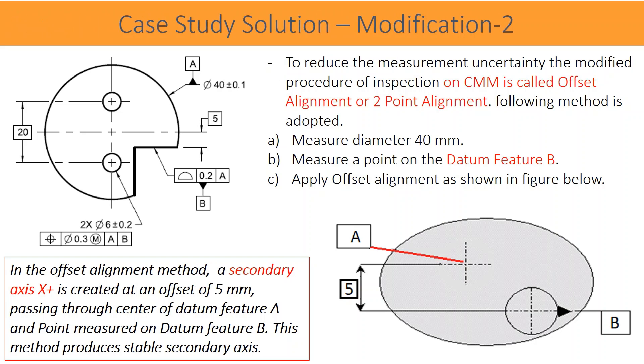To reduce the measurement uncertainty, the modified procedure of inspection on CMM is called Offset Alignment or Two Point Alignment. Following method is adopted: measure diameter 40 millimeters, measure a point on the datum feature B, apply offset alignment as shown in figure below. In the offset alignment method, a secondary axis X plus is created at an offset of 5 millimeters, passing through center of datum feature A and point measured on datum feature B. This method produces stable secondary axis.